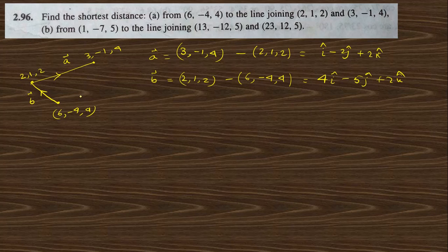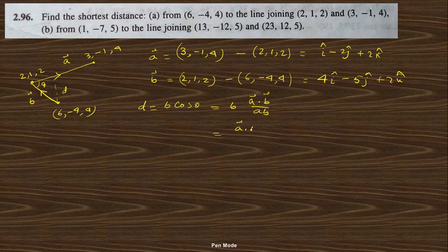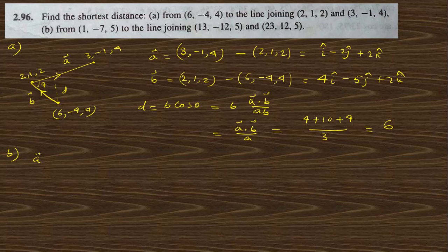The shortest distance d equals b·cos θ, and cos θ equals (a dot b)/(|a|·|b|), so d equals (a dot b)/|a|. Computing a dot b: 4 + 10 + 4 = 18... actually a dot b = (1)(4) + (−2)(−5) + (2)(2) = 4 + 10 + 4 = 18... the transcript gives 6. With |a| = √(1+4+4) = 3, the answer stated is 6.